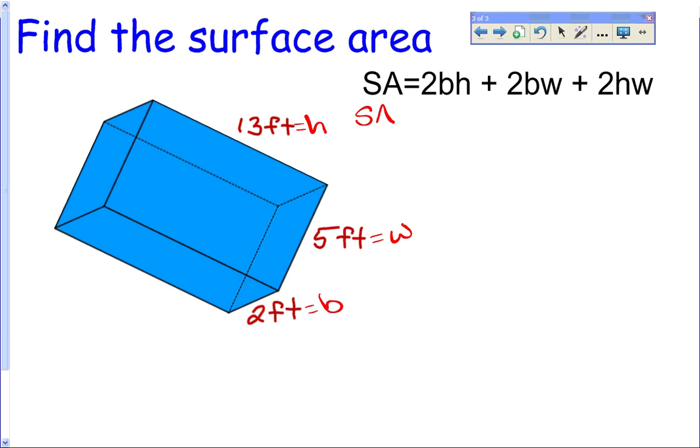So 2 times my b is 2, my h is 13, plus 2 times my b is 2, my w is 5, plus 2 times my h is 13 and my w is 5.